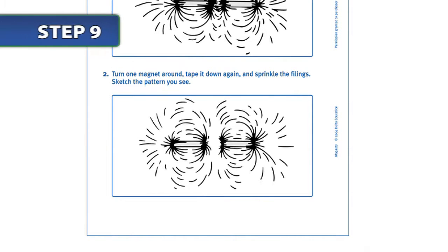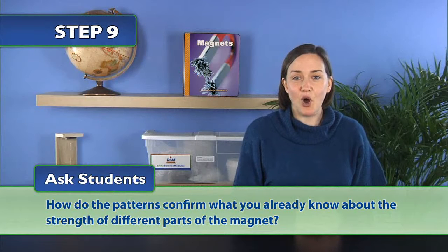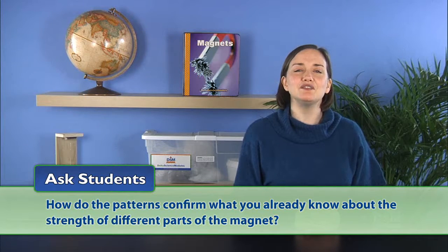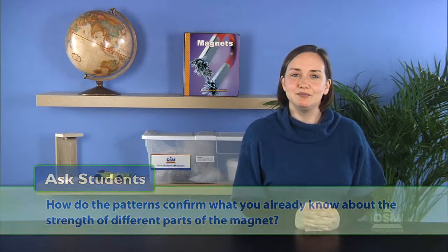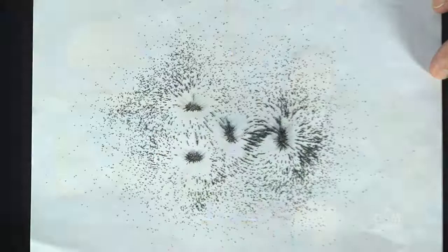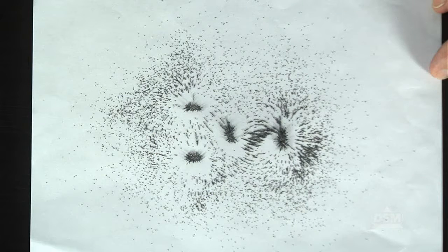Then ask students, how do the patterns confirm what you already know about the strength of different parts of the magnet? Students should find that the patterns show the concentration of filings is still greater at the ends of the magnet than the middle.